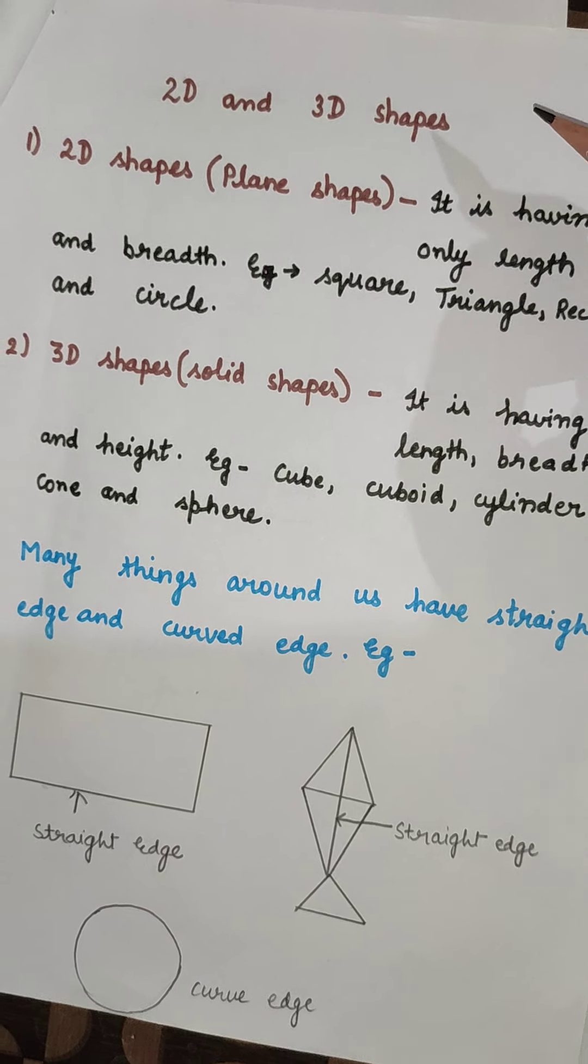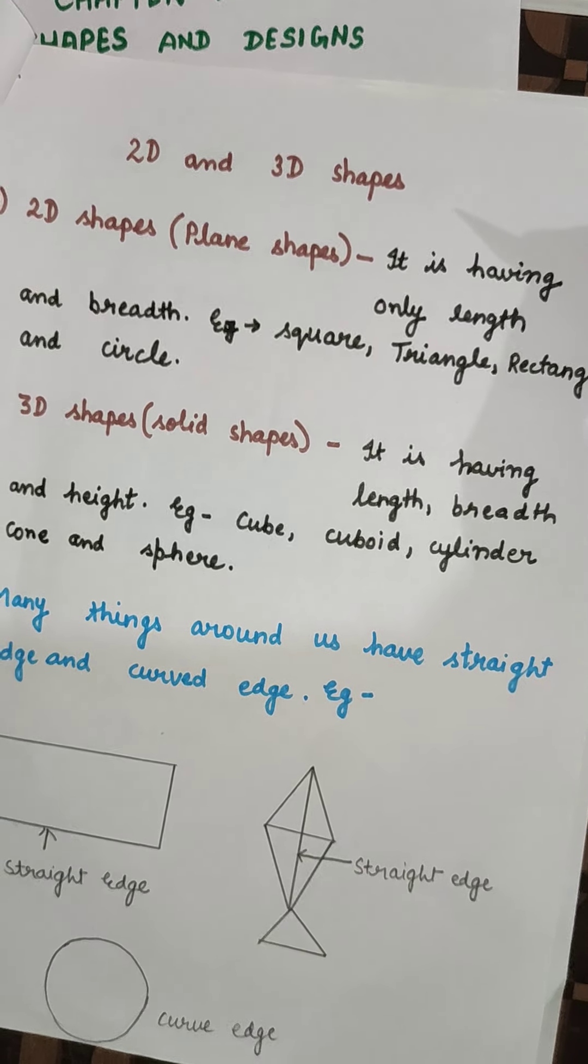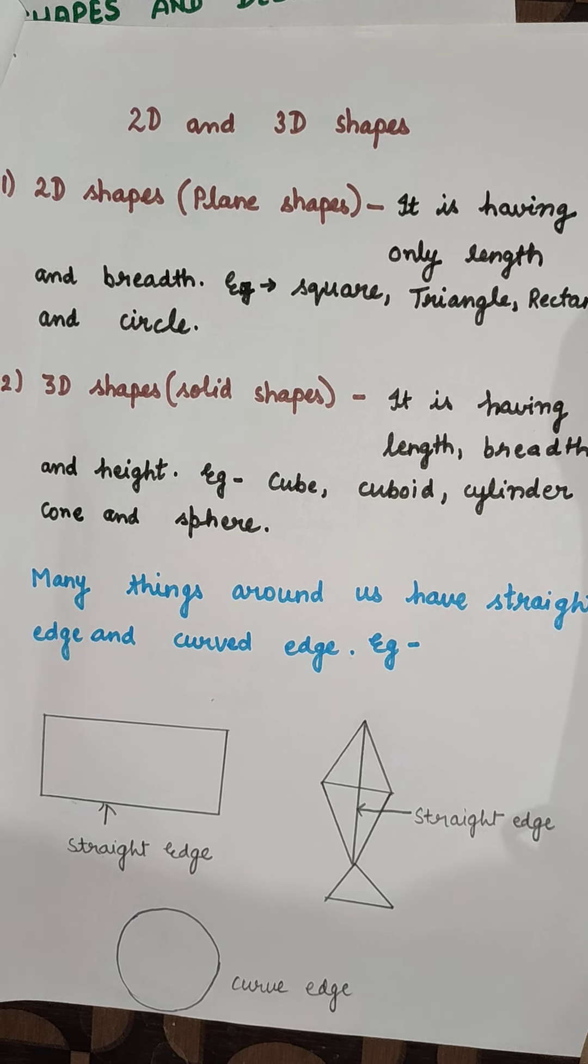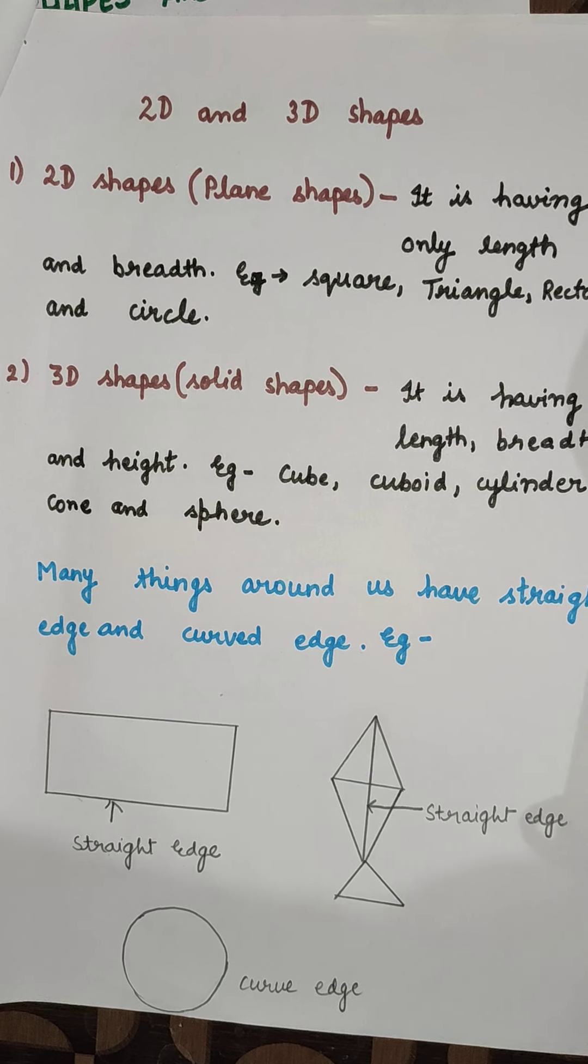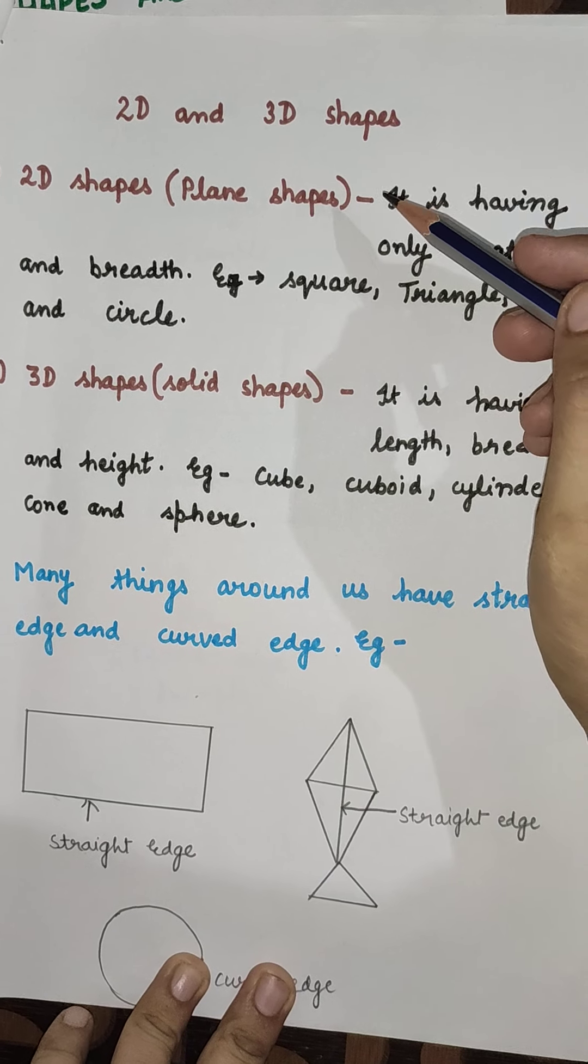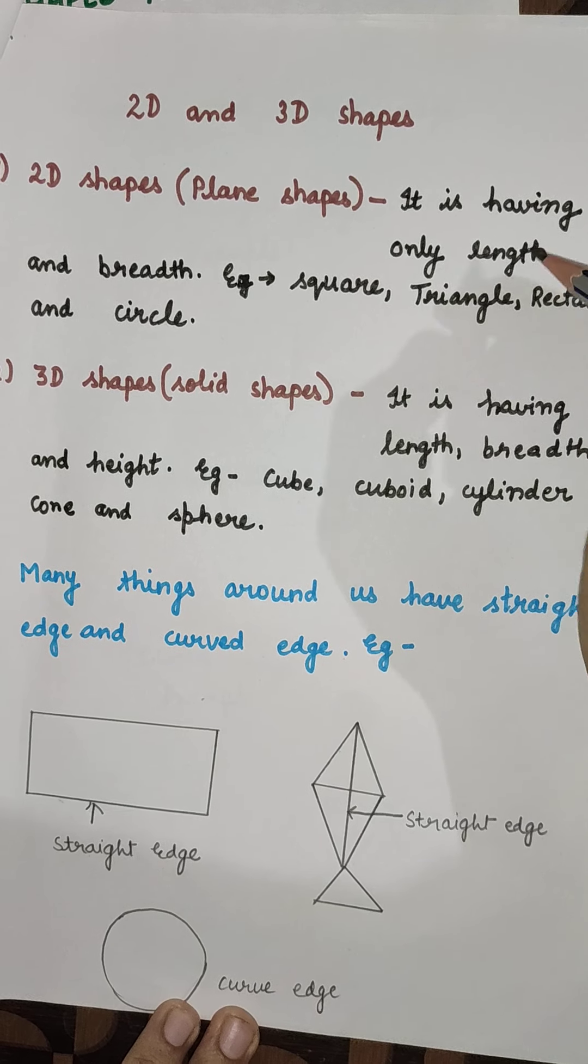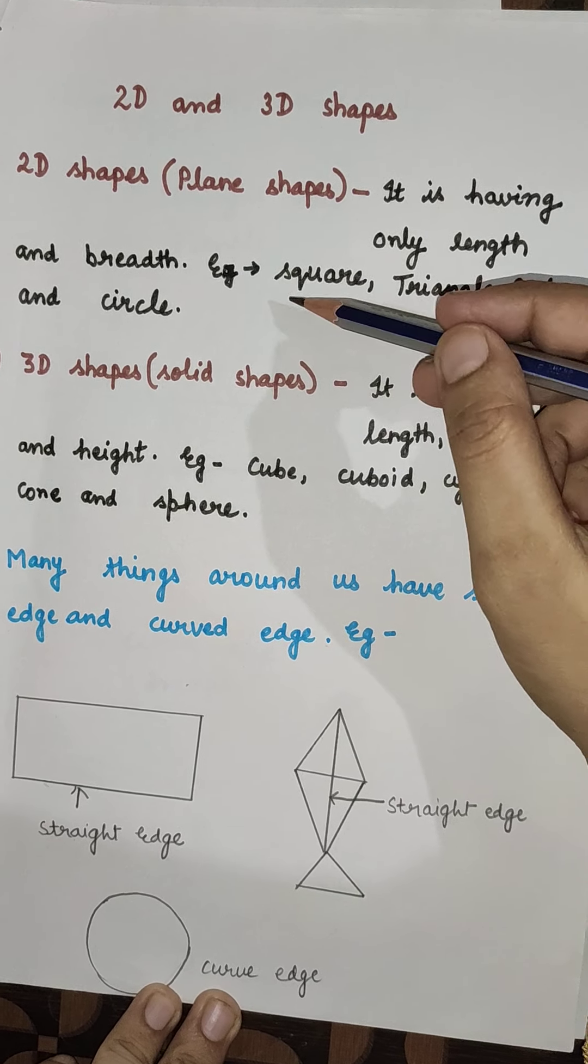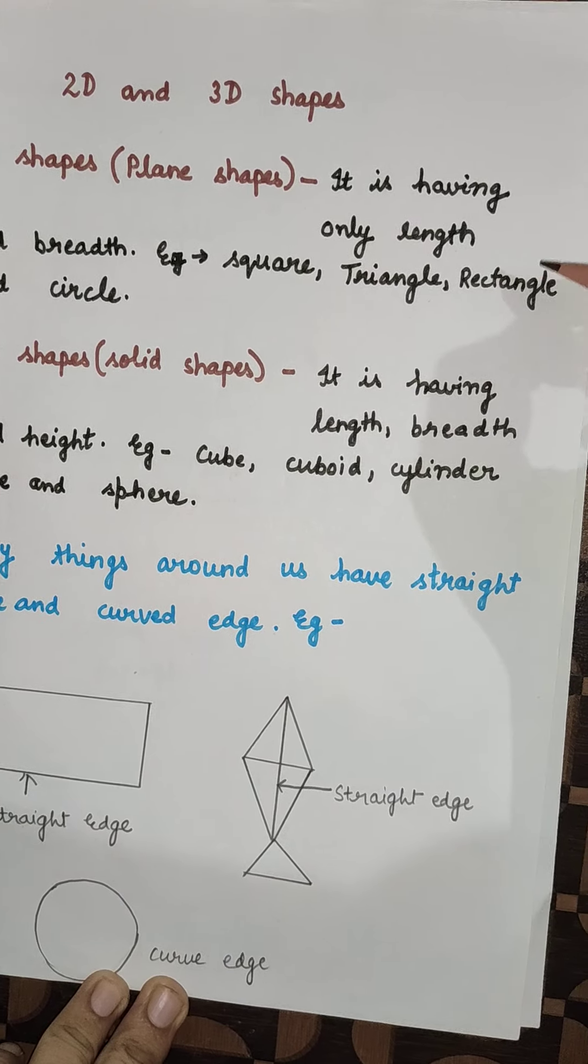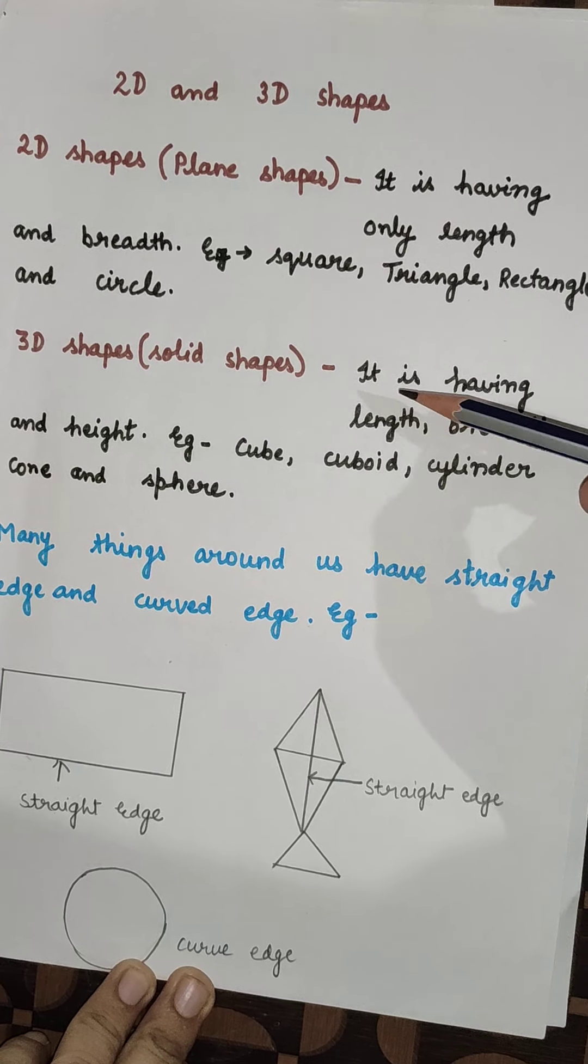As I told you, I explained earlier about the 2D and 3D Shapes. Now, 2D Shapes, we call 2D Shapes as Plane Shapes. It is having only length and breadth. Examples are Square, Triangle, Rectangle and Circle.